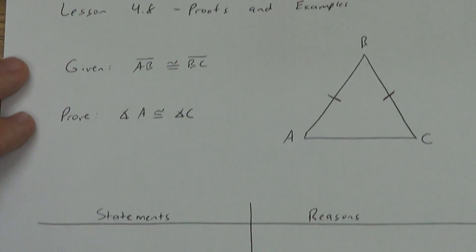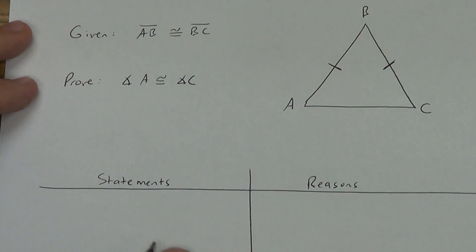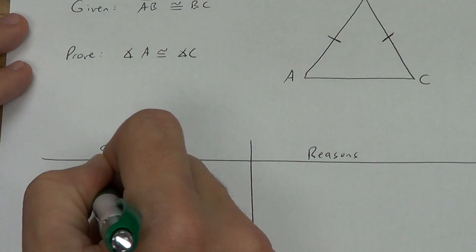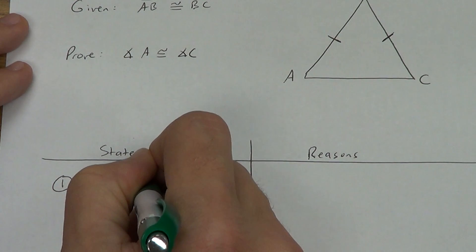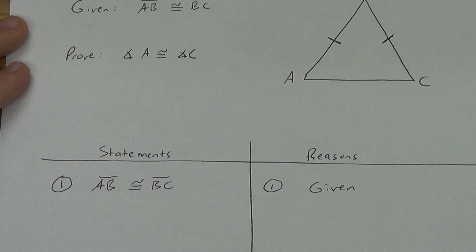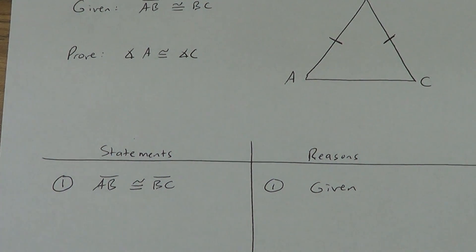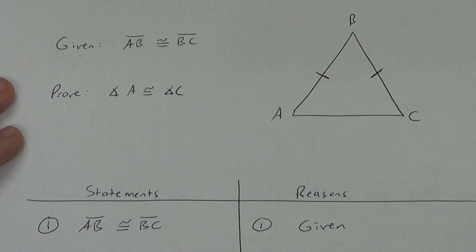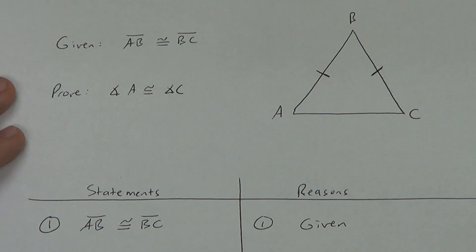Copy this down and get your statement-reason column set up. Pause the video if you need to. So AB is congruent to BC — that is my given. Now, we're going to prove that we have two congruent triangles here. You might say we only have one triangle in this picture, and you're right. But we have a postulate from earlier in the year that's going to help me draw two congruent triangles and prove that they are actually congruent.